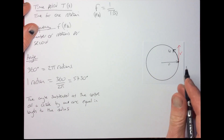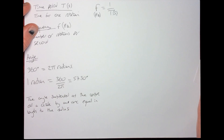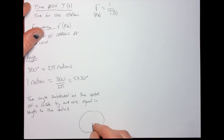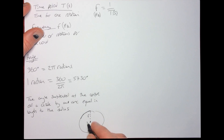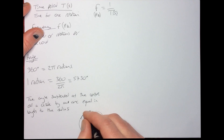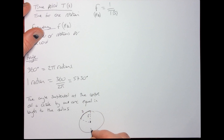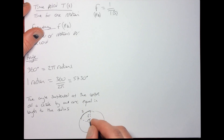Let's draw a circle. Here's the radius r. The object moves through a certain distance s - that's the arc through which it's moved. This is r, and theta is the angle subtended. So you have the radius, the arc length s, and the angle theta subtended at the center.